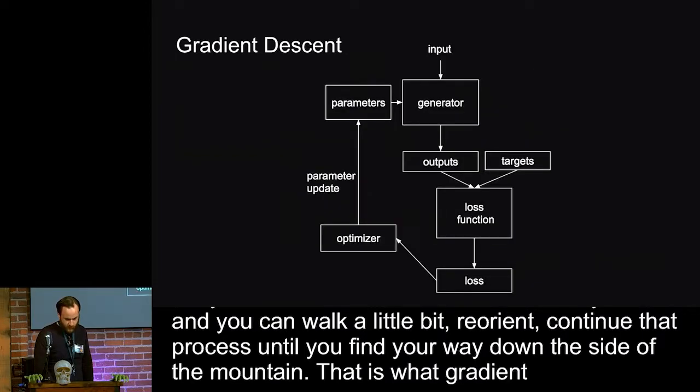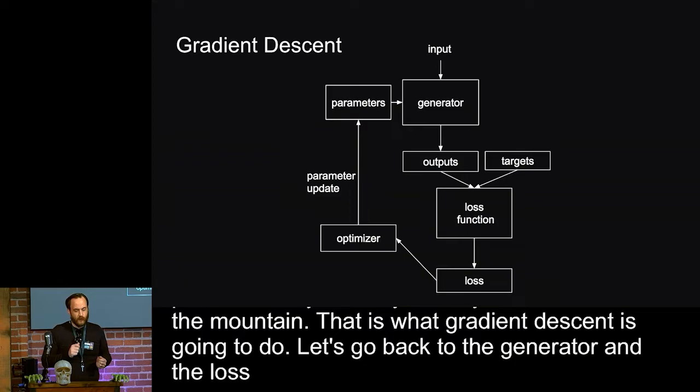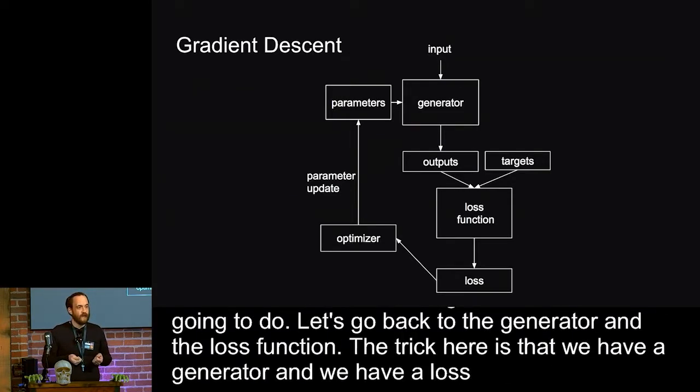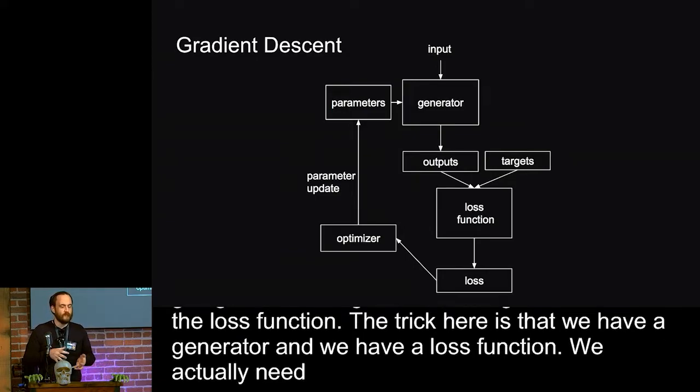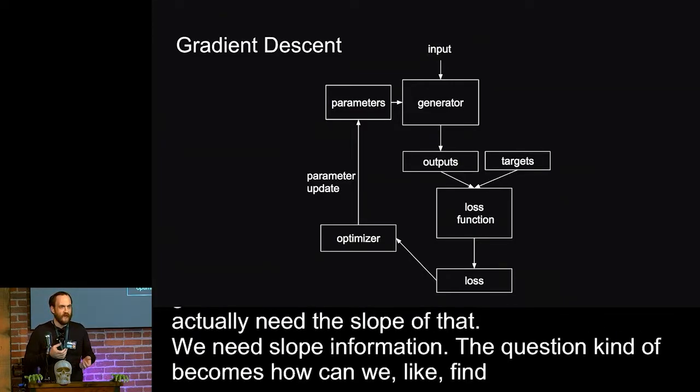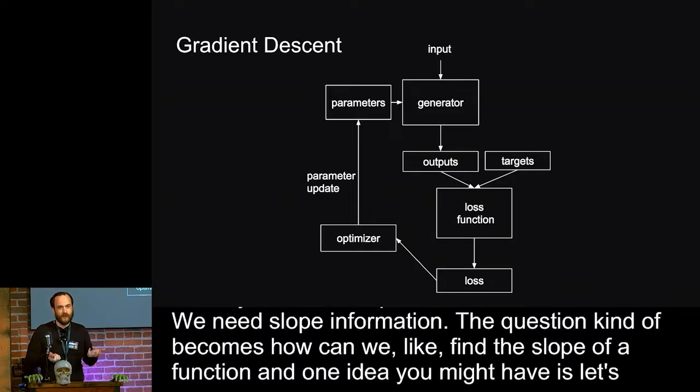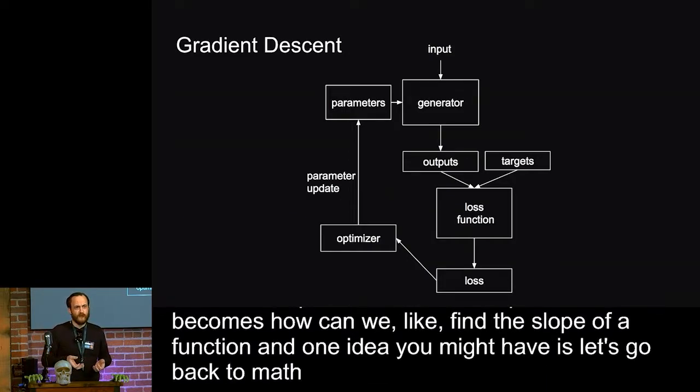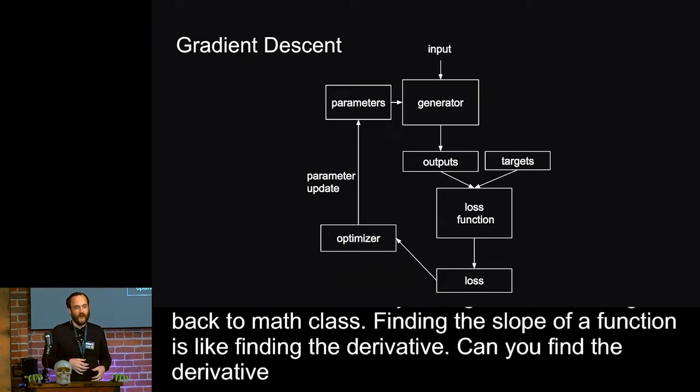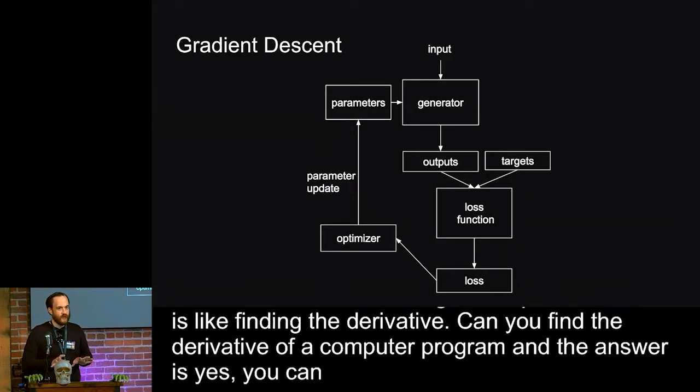So let's go back to the generator and the loss function. So the trick here is that we have a generator and we have a loss function. We actually need the slope of that. We need slope information. So the question kind of becomes how can we find the slope of a function? And one idea you might have is, well, let's go back to math class. Finding a slope of a function is like finding the derivative of it. And so can you find the derivative of a computer program? And the answer actually turns out to be yes. You can find a derivative of a computer program if it's structured in the right way. That's a programming technique called differentiable programming.